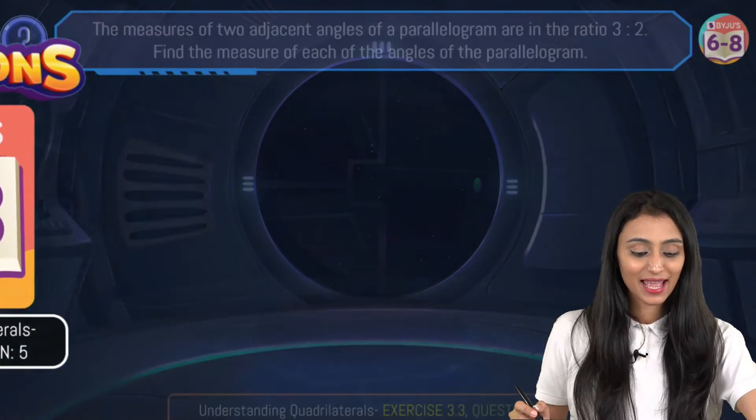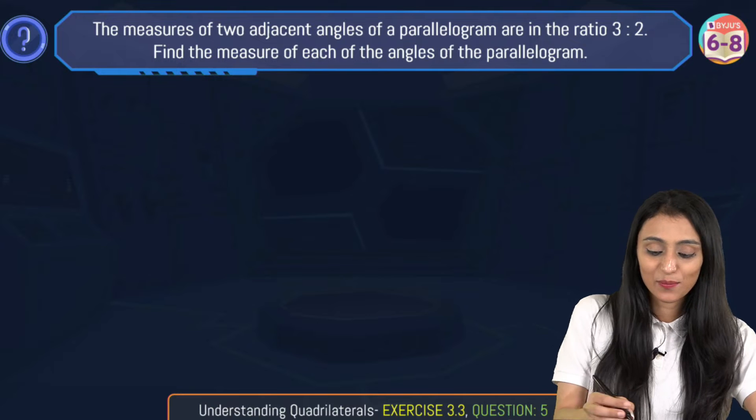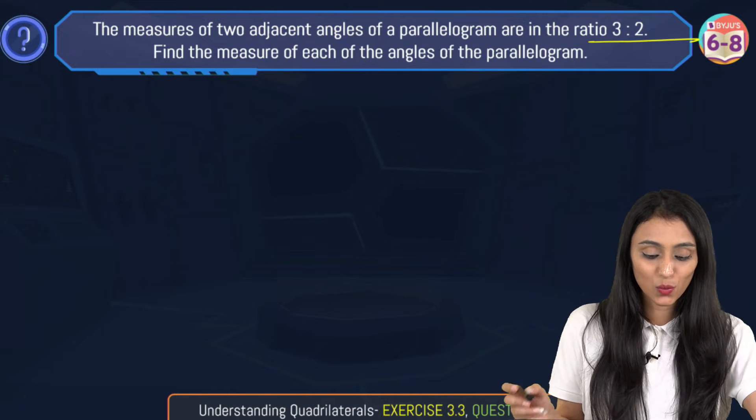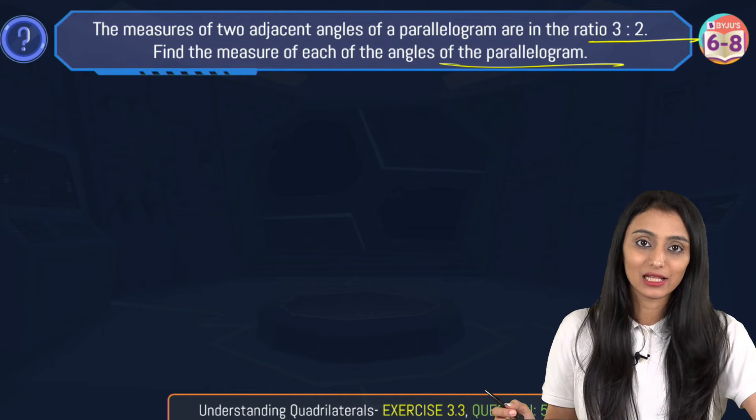So let's take a look. The measure of two adjacent angles of a parallelogram are in the ratio 3 is to 2. Find the measure of each of the angles of the parallelogram.